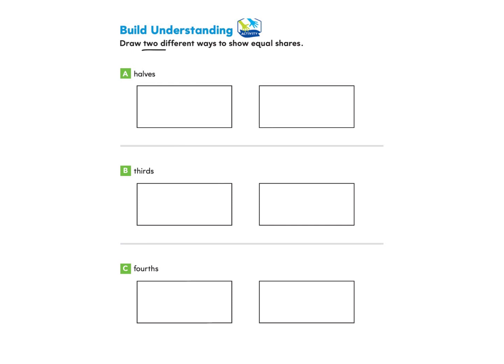Draw two different ways to show equal shares. The first part asks us to draw halves. I'm going to start at this middle point here and just go straight across. Now I need to show a different way to show equal shares. I've gone horizontally, which means going this way, and now I'm going to go vertically, which means up and down. I go to the top, find the middle, and draw a line all the way down. So now I have shown two ways to make halves.